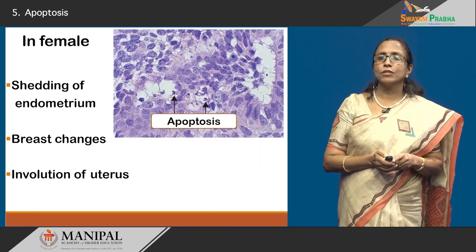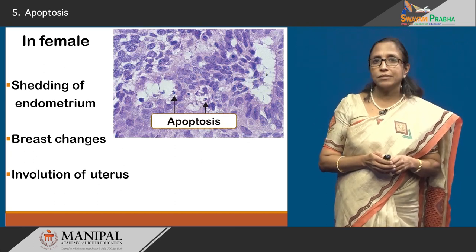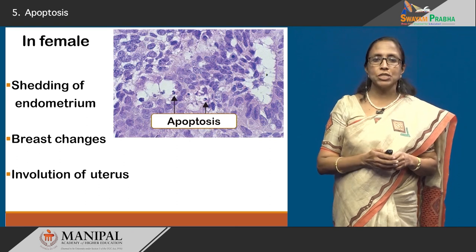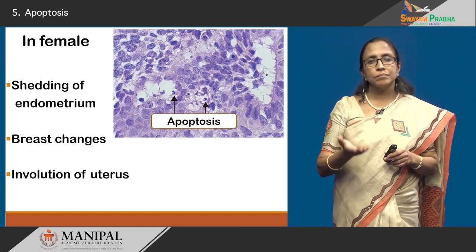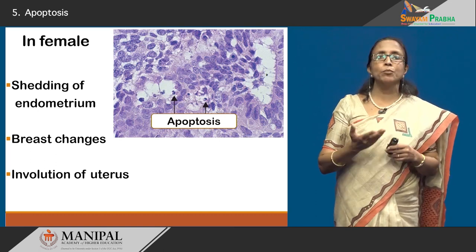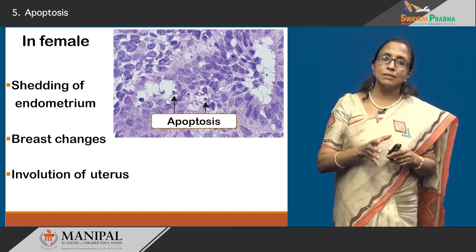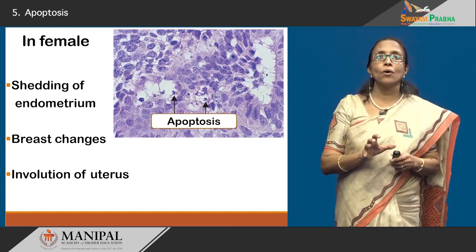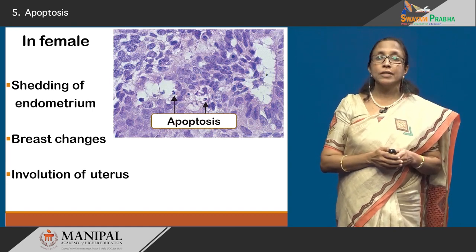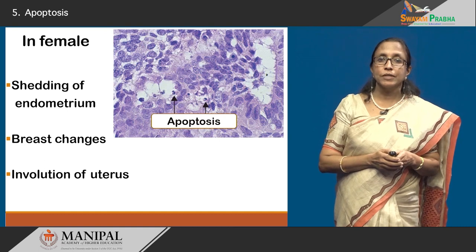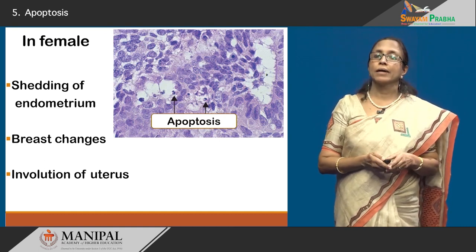An example in the female: the shedding of the endometrium in menstruation, the changes that occur in the breast with puberty, then with lactation, and when lactation is done with weaning, the breast cells all come back to normal — that is by the process of hepatosis. The involution of the uterus and the atrophy of the uterus at menopause are also by hepatosis.